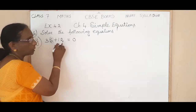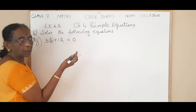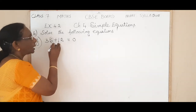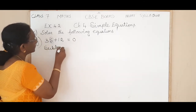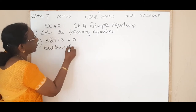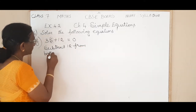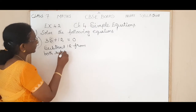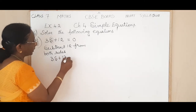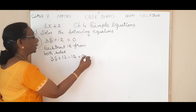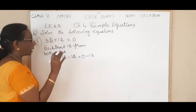So here the operation is addition. To remove this 12 from the left hand side, what is the opposite operation? Subtraction. So you subtract 12 from both sides. So 3s plus 12 minus 12 is equal to 0 minus 12. 12 minus 12 is 0, so 12 has got eliminated.